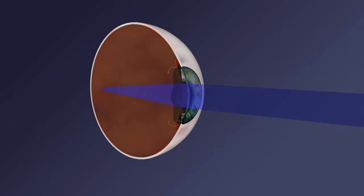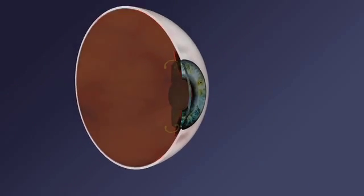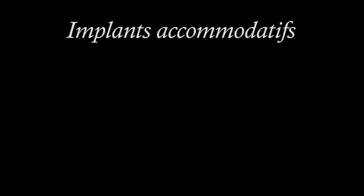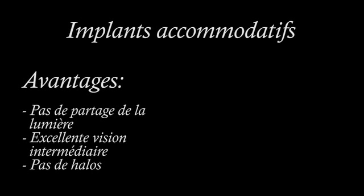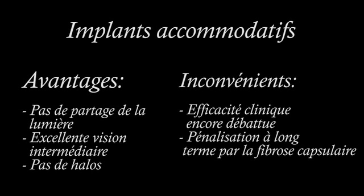The accommodative lens is quite different from the multifocal. The mechanical structure of the lens allows for a forward bending during residual accommodation and an apparent increase of its power. Because there is no sharing of light between distance and near vision, there are no halos and intermediate vision is better. Although very successful in the US, this lens is not widely used in France where its clinical efficacy is still debated.